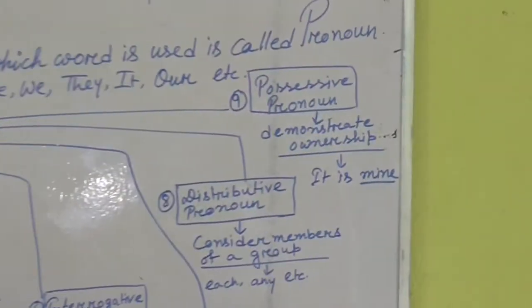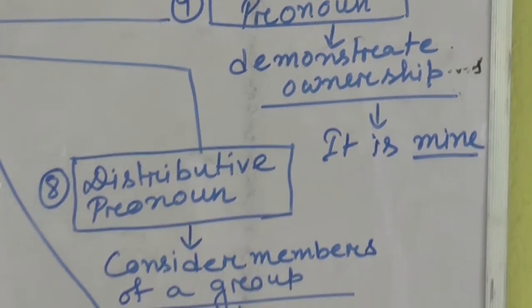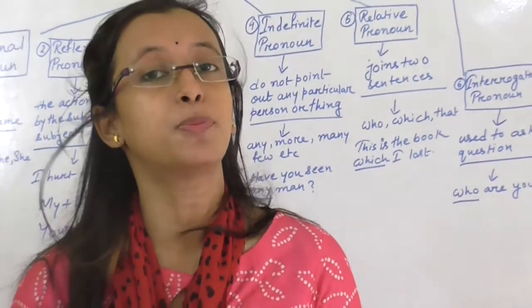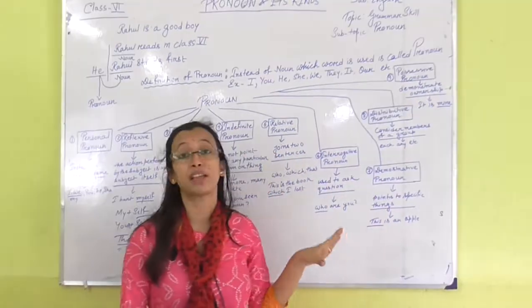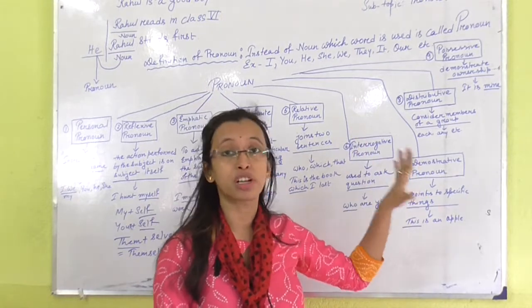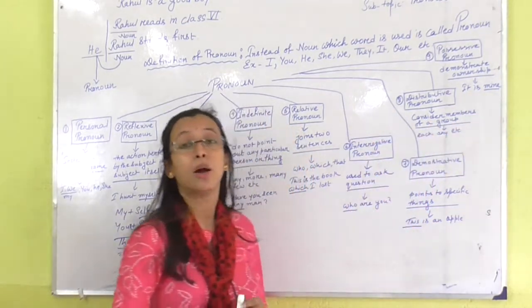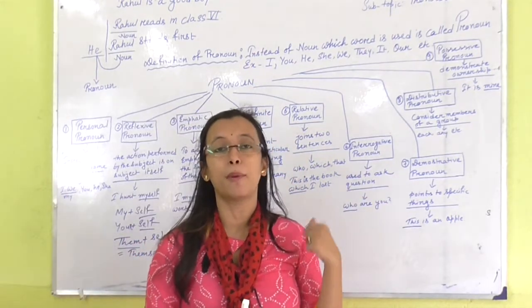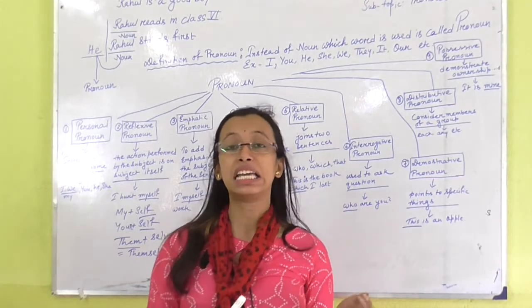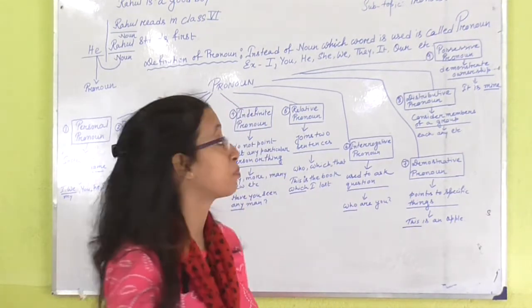Number nine: possessive pronoun. The word possessive comes from possession, which means ownership. Like 'This book is mine' — the book's ownership is mine. Possessive pronoun demonstrates or discusses ownership. Examples: from I — mine; from you — yours; from our — ours; from he — him; from she — her. The pronoun which demonstrates ownership is called possessive pronoun.